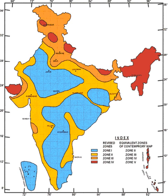Zone 4 is called the High Damage Risk Zone and covers areas liable to MSK VIII. The IS code assigns a zone factor of 0.24 for Zone 4. Jammu and Kashmir, Himachal Pradesh, Uttarakhand, Sikkim, the parts of the Indo-Gangetic Plains, north Punjab, Chandigarh, western Uttar Pradesh, Terai, north Bengal, Sundarbans, and the capital Delhi fall in Zone 4. In Maharashtra, the Patan area is also in Zone 4.